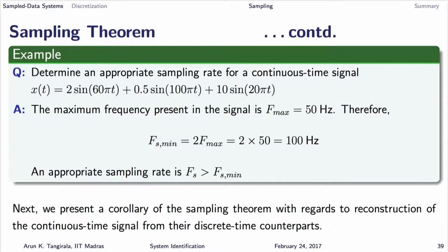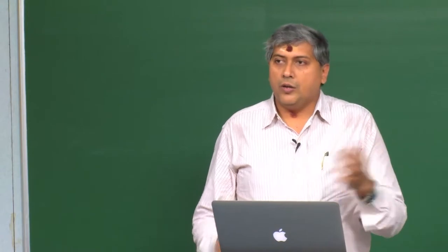Let us recap what we learnt yesterday. The main message is the sampling theorem, which states that if a continuous time signal has a maximum frequency of f_max, or if you have a sinusoid of single frequency f, then we should choose our minimum sampling frequency as two times that.